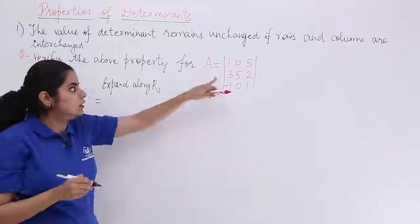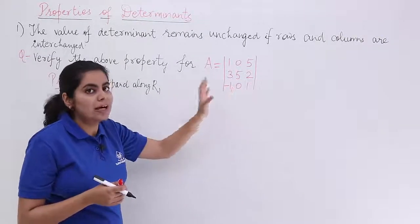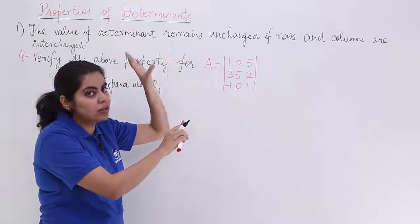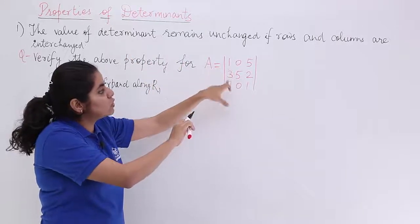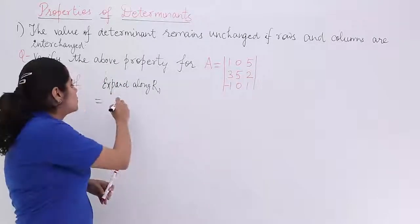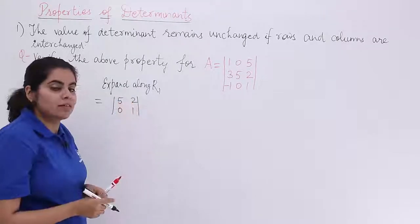I have 1 into something. What is 1 into something? That is the same thing, so I don't need to write 1. There is no use of writing 1. Eliminate the first column, eliminate the first row. You have a sub-determinant. Just write that sub-determinant: 5, 2, 0, 1.